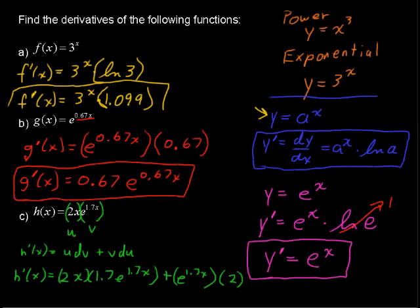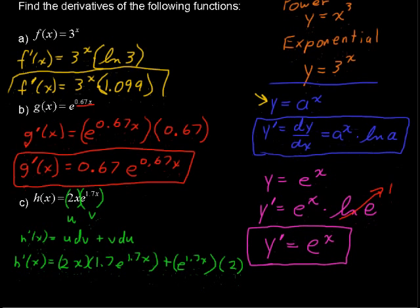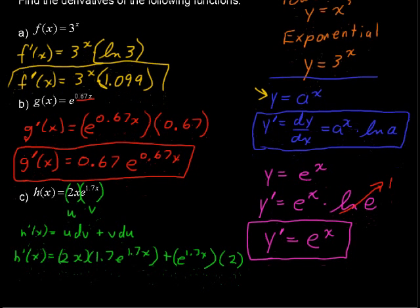So certainly we could rewrite that. I'll just give myself a little bit more space to write that in the bottom here. And I'll have h prime of x equals 3.4x, you can multiply the 2 and the 1.7, times e to the 1.7x plus 2 times e to the 1.7x.